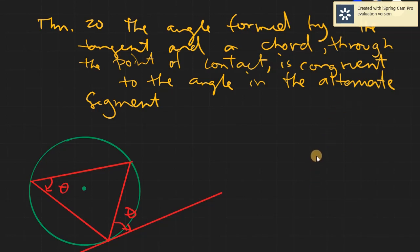Okay, Assalamualaikum warahmatullahi wabarakatuh. We are nearing the end of our theorems. We have theorem number 20, being the angle formed by the tangent and the chord through the point of contact is congruent to the angle in the alternate segment.